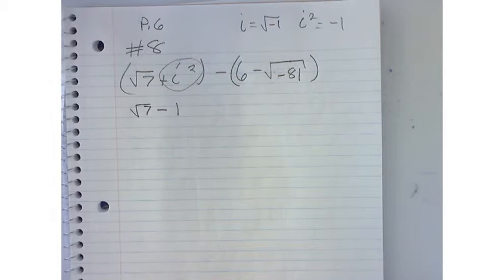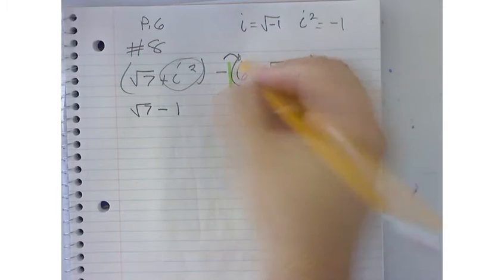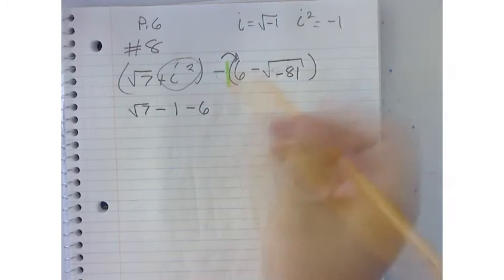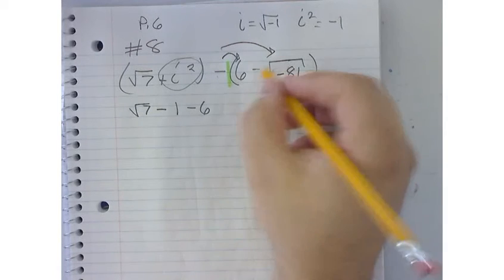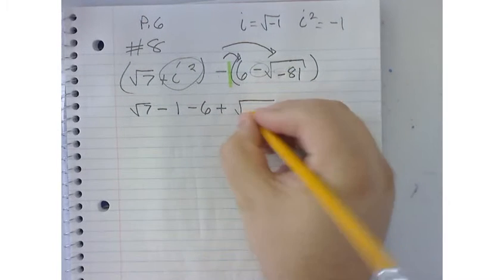Now I'm going to treat this like I'm multiplying by a negative 1, and so I'm going to distribute that through the parentheses. So negative 1 times 6 is negative 6. Now a negative times a negative square root, we're only addressing that first negative, right? You can't change them both. So that becomes a positive square root of negative 81.